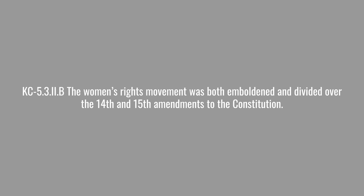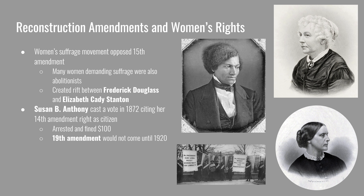The next key concept covers the split in the women's rights movement. The movement was both emboldened and divided over the 14th and 15th Amendments. Many women opposed the 15th Amendment because they had been demanding suffrage for over 70 years. Many women in the movement were also part of the abolitionist movement — Elizabeth Cady Stanton and Lucretia Mott began their advocacy after being denied speaking privileges at an abolitionist convention in London. Leaders like Stanton and Mott would not support the 15th Amendment for its omission of women in its language.